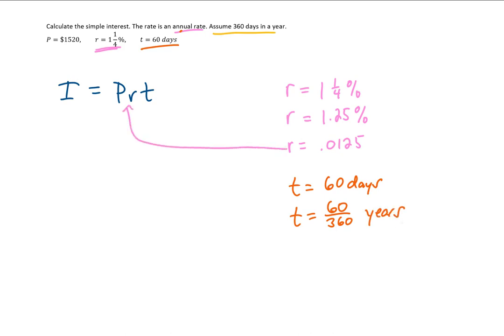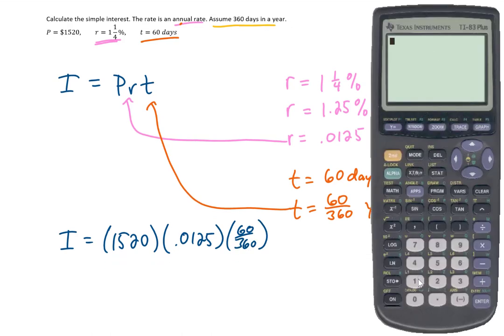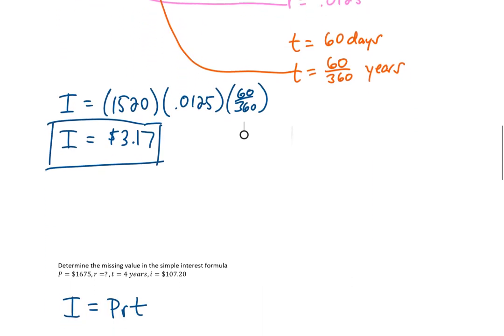We're going to plug these two values that we just found into our formula. That gives us 1520 times .0125 times 60 over 360. I'll plug all of that into my calculator, and I get a total interest owed of $3.17, and that's the answer we're looking for.